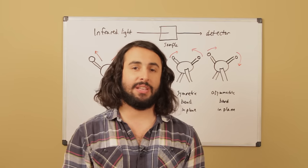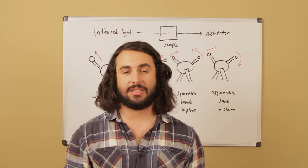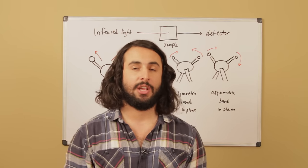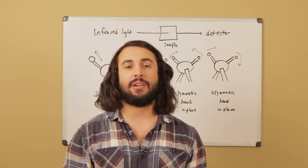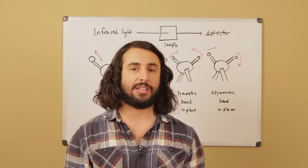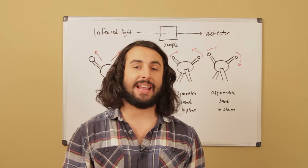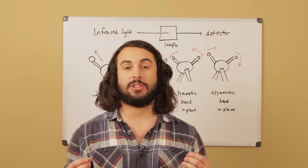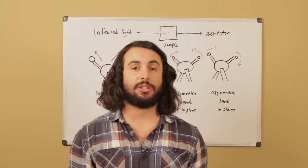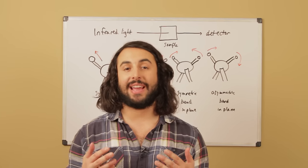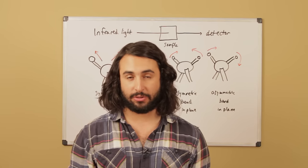Spectroscopy is the study of the interaction of light and matter, and there are a lot of forms of spectroscopy that we can use to gather data about what the structure of a molecule might be. Right now we're going to look at IR spectroscopy.